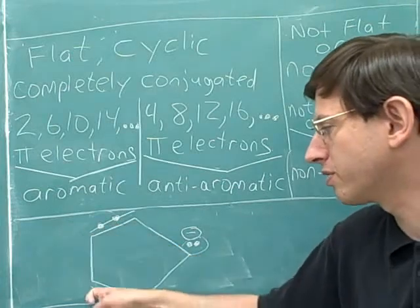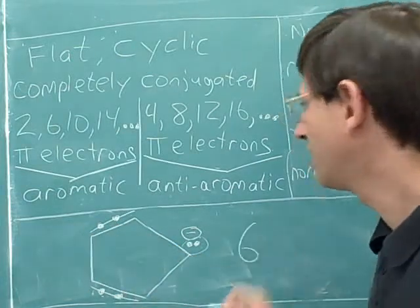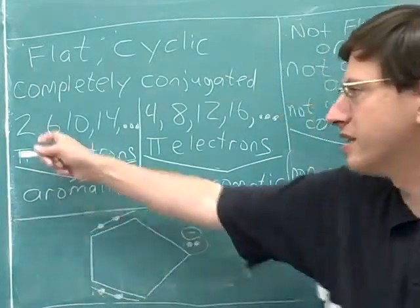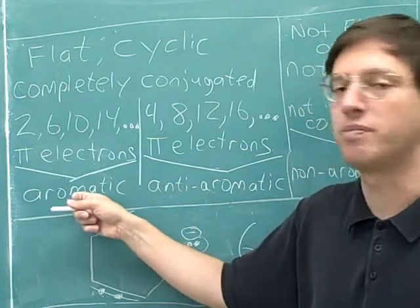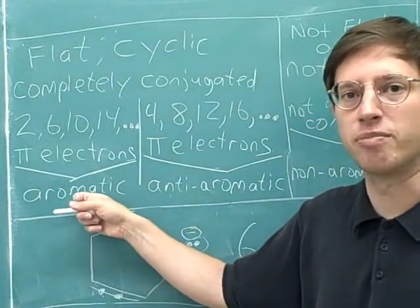Counting gives us six pi electrons — one, two, three, four, five, six — which puts us in the aromatic list. So this compound is aromatic.